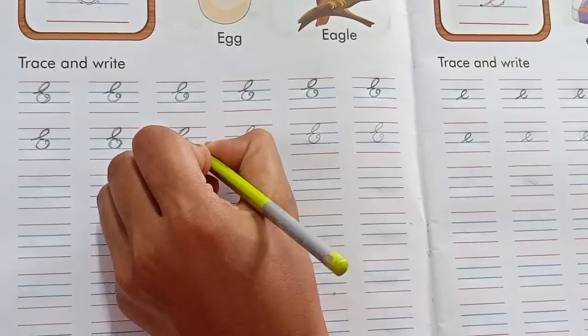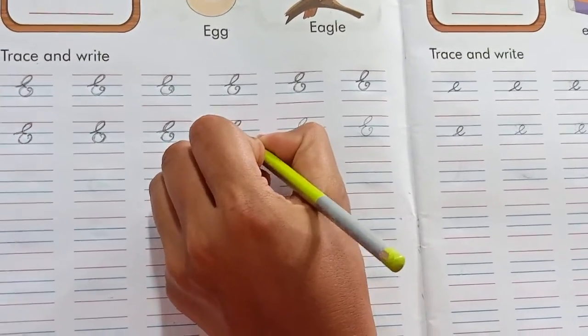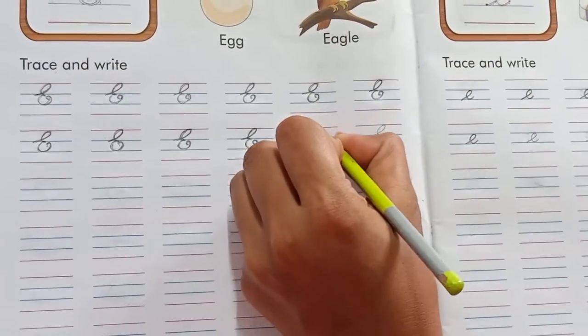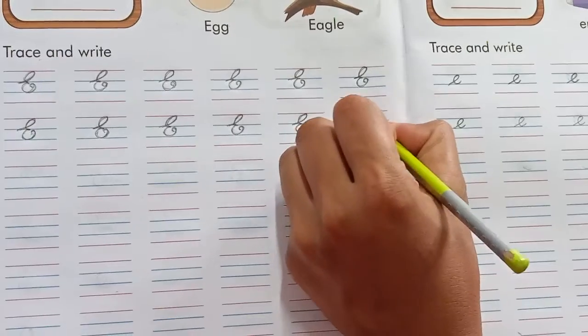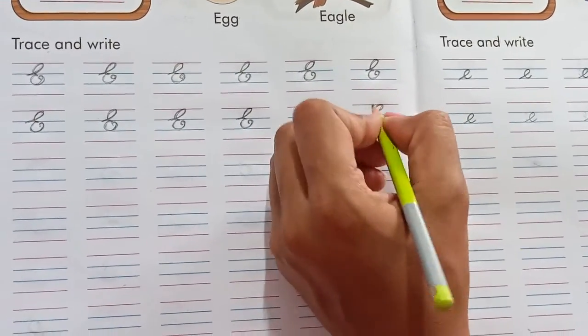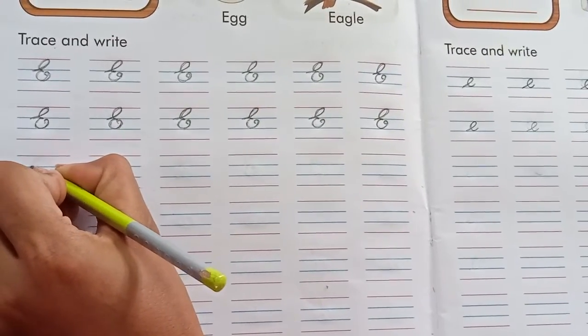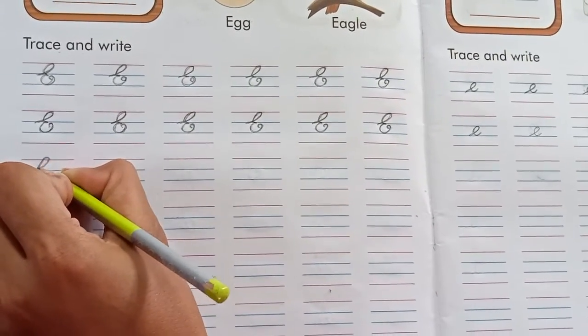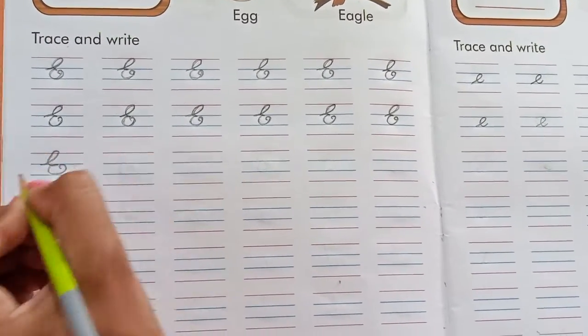Like this. You all have to trace like this. Slowly, slowly and properly. Write neatly. Now starting from the blue line. Touch the red line like this and make a small curve.